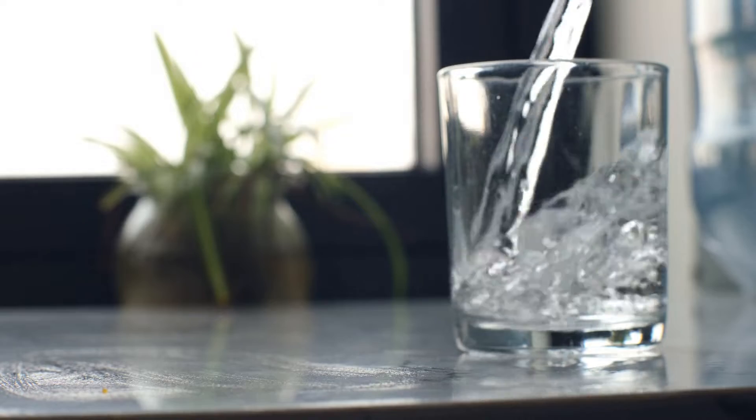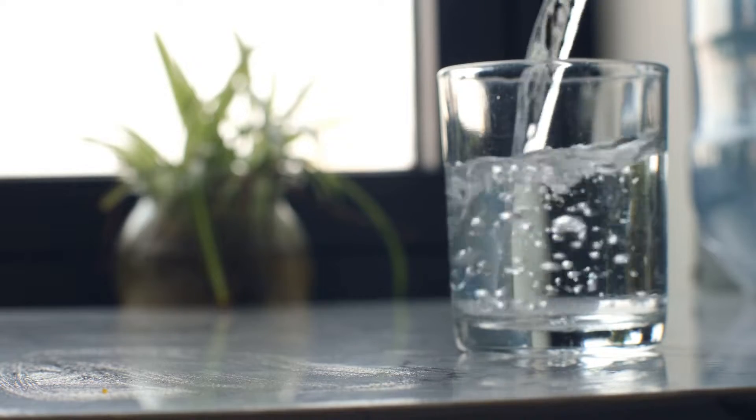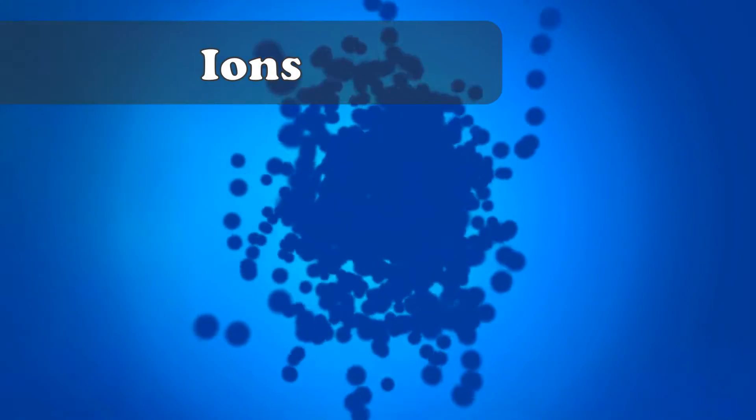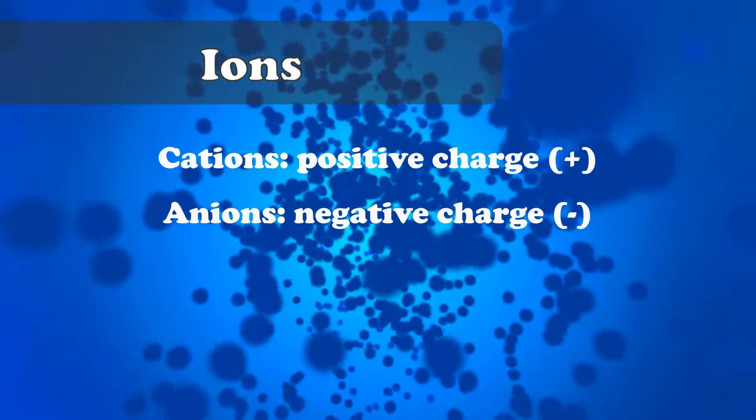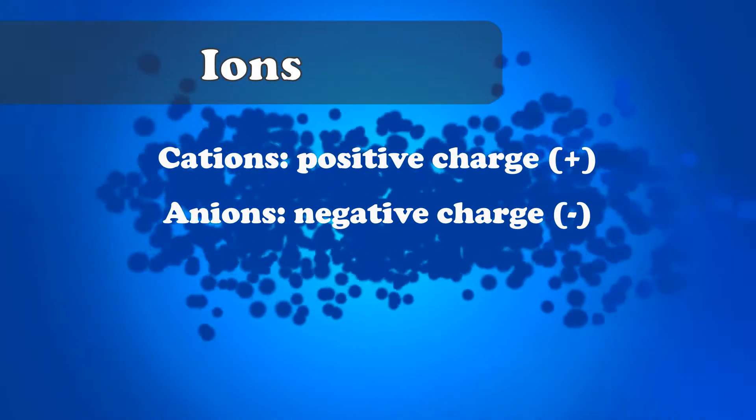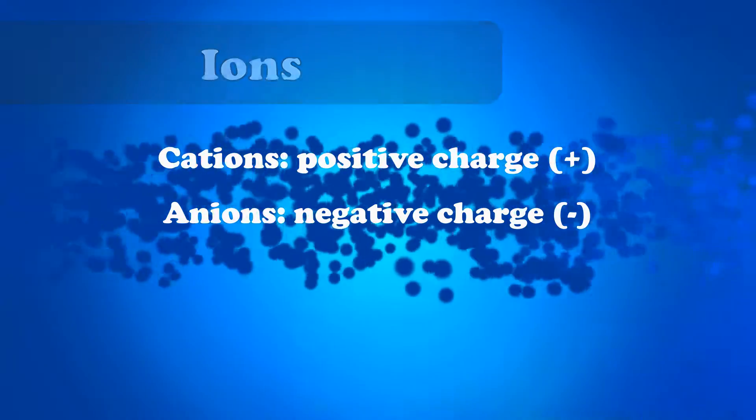So what is an electrolyte? Electrolytes are minerals that can hold either a positive or negative electrical charge when dissolved in water. These electrically charged particles are referred to as ions and they fall into two categories: cations, which are positively charged particles, and anions, which are negatively charged particles.